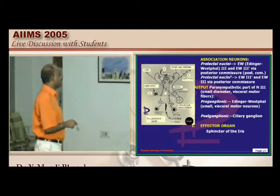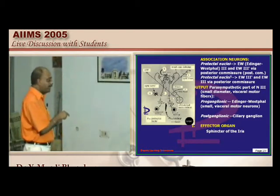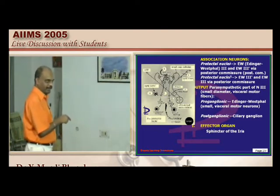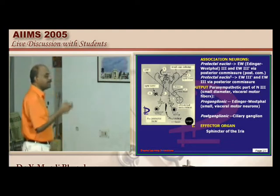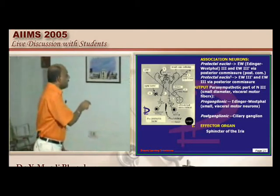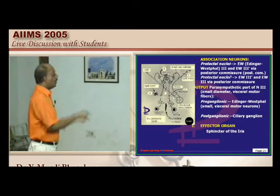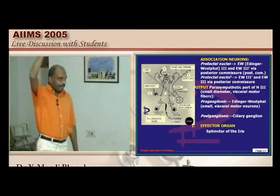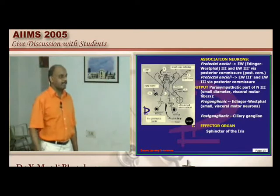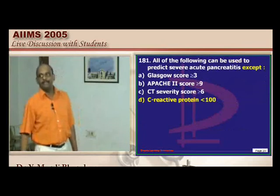The entire pupillary reflex is completed at the midbrain level. Cortical blindness occurs at the occipital lobe and cerebral cortex level — the midbrain is not affected, so the pupillary reflex remains intact. This explains why cortical blindness presents with normal pupillary response.